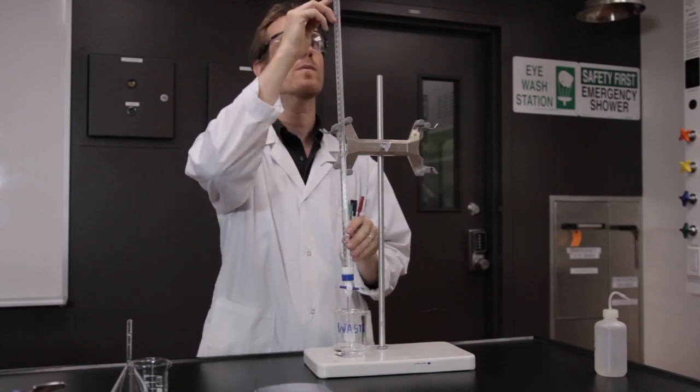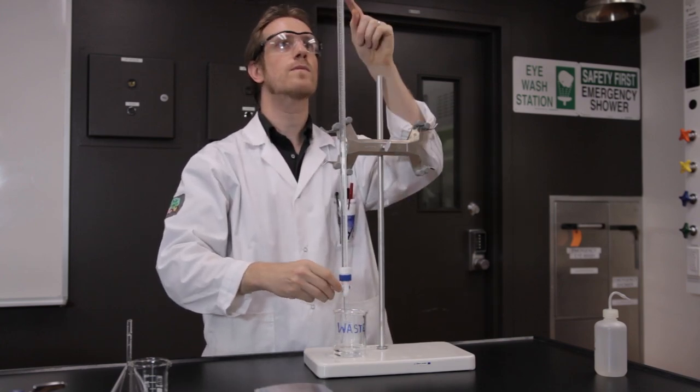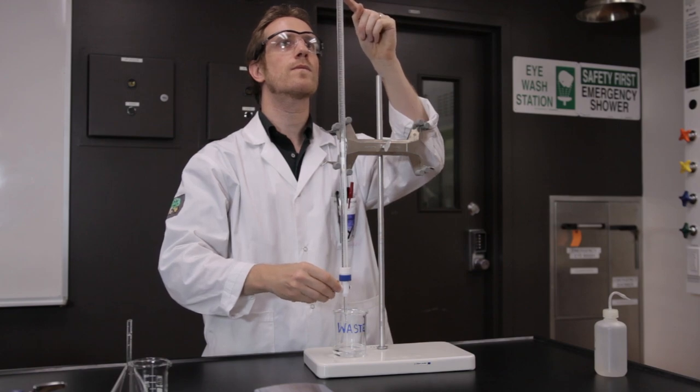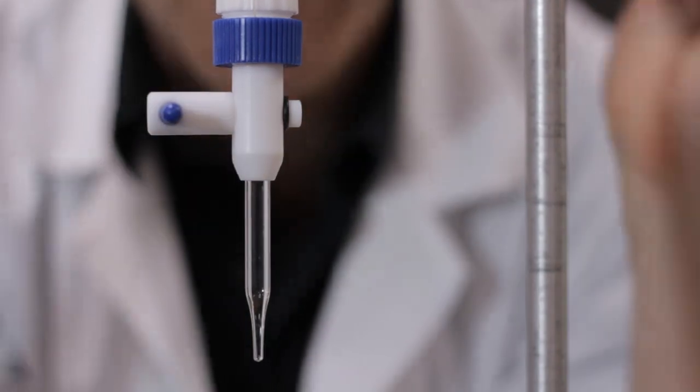Place the waste beaker under the tip. Open the stopcock full force to drain and fill the tip. Ensure there are no air bubbles. You may have to flick the tip or rotate the stopcock 180 degrees.